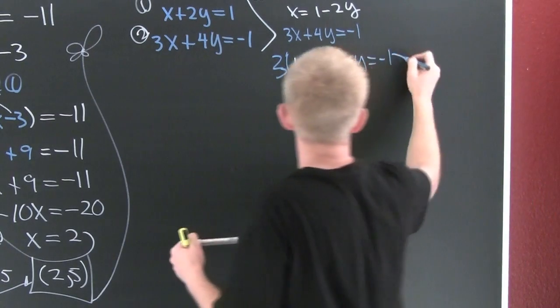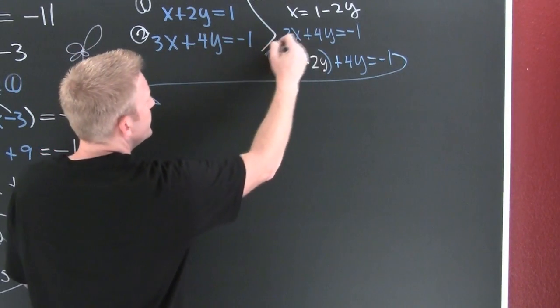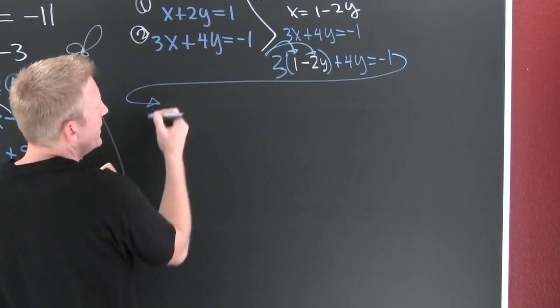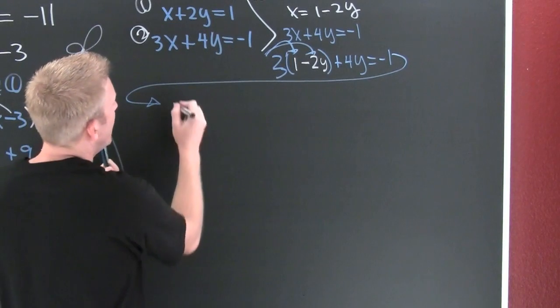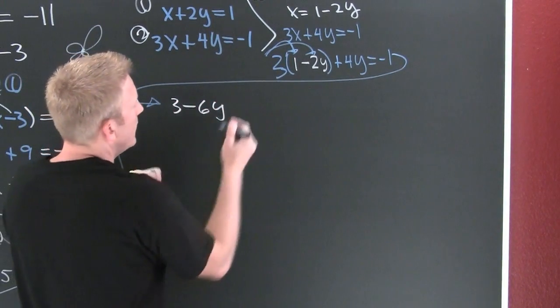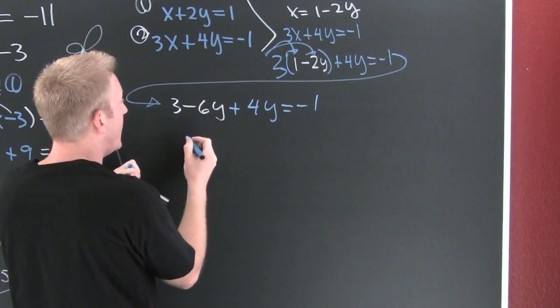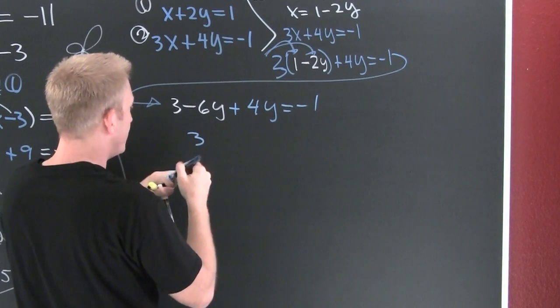I'm gonna take it right here and then we'll have 3 minus 6y plus 4y is minus 1. Gather, collect, and combine.